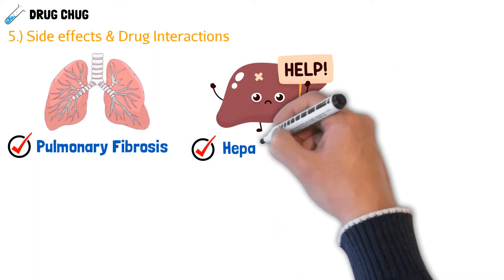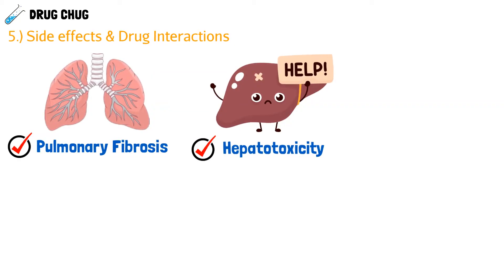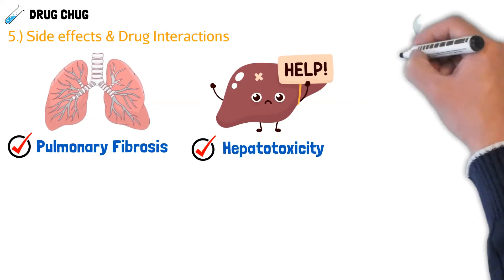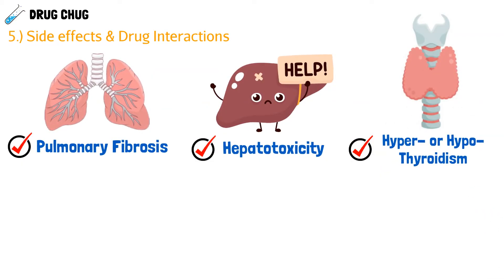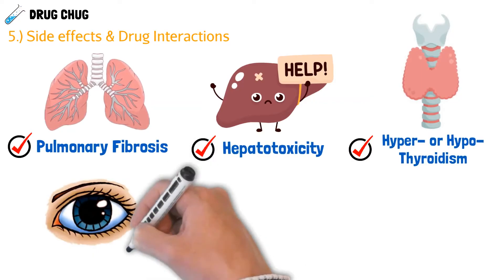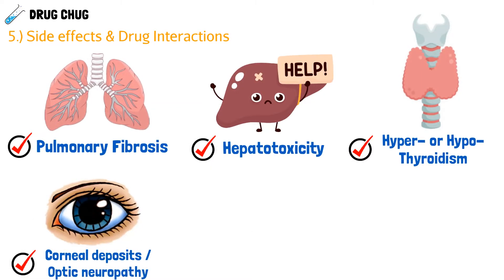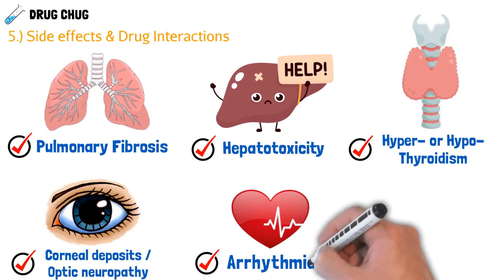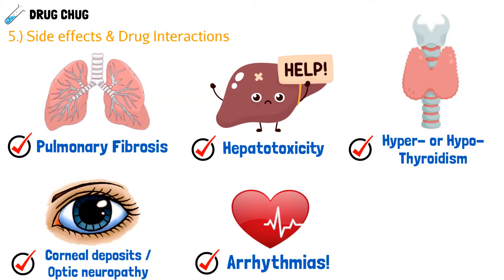Amiodarone can also cause hyper- or hypothyroidism. The reason for this is that amiodarone has four iodine structures attached to it, and the iodine is what causes thyroid dysfunction. The next thing to look out for is corneal deposits in the eye — amiodarone can start precipitating deposits that are visible in the eye, obstructing some vision. And ironically, amiodarone can also cause arrhythmias. Yes, it's used to prevent or fix arrhythmias, but if we block too many channels in the heart, it might actually start an arrhythmia. Counterintuitive, but that's just how it works.